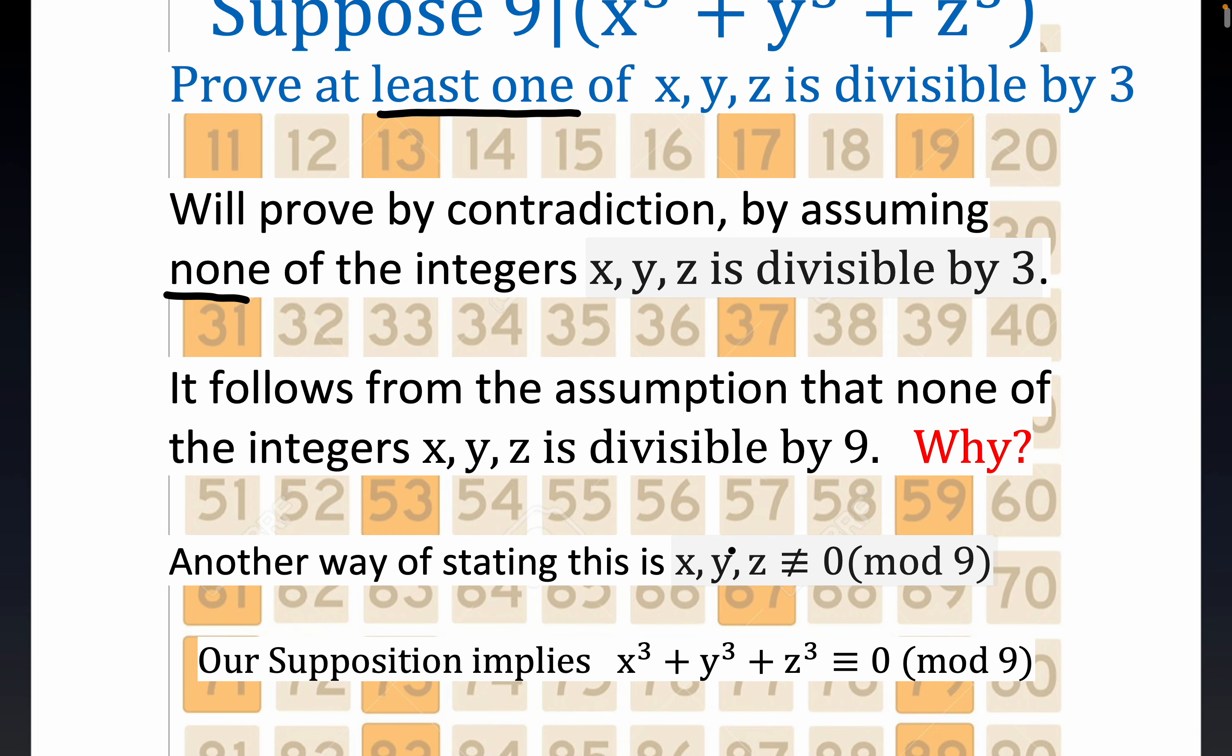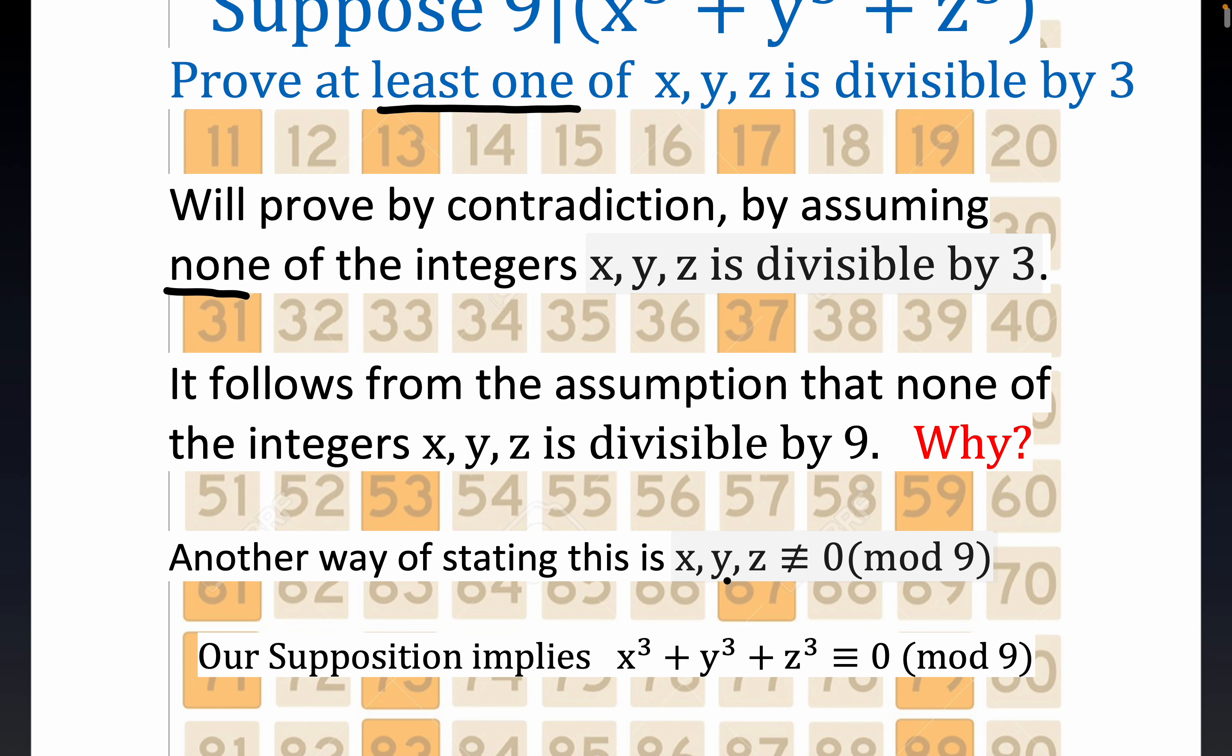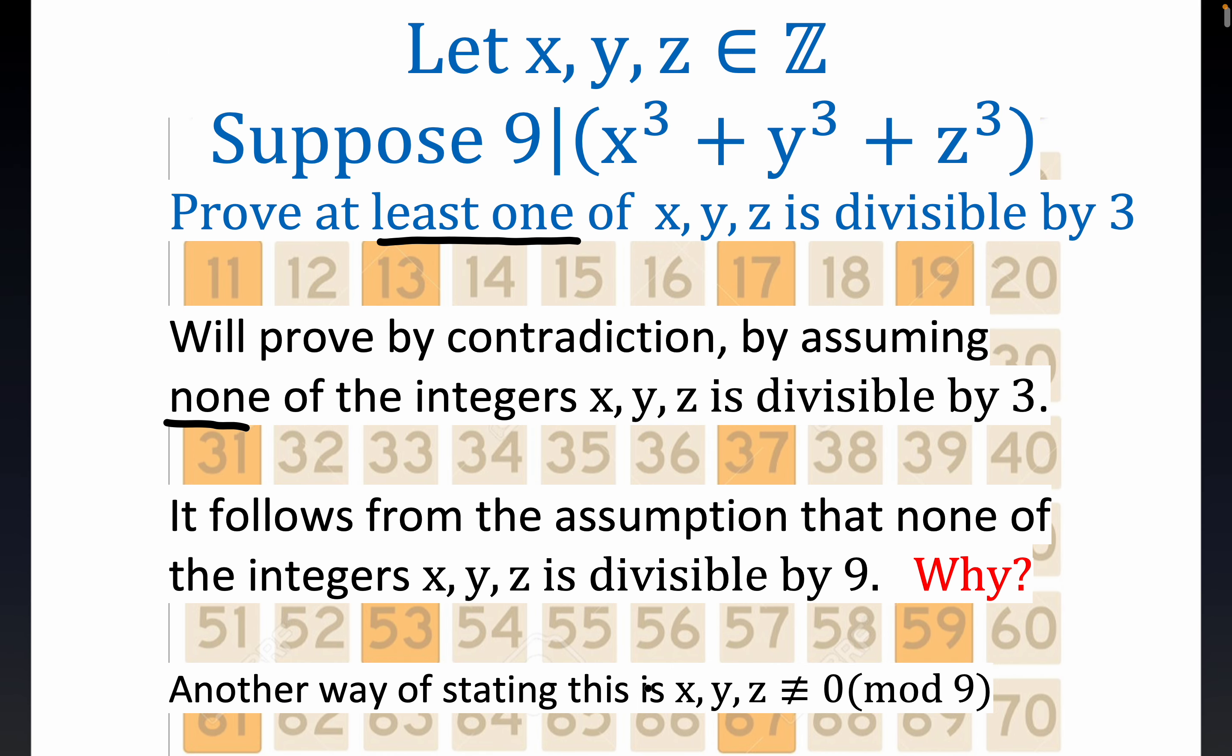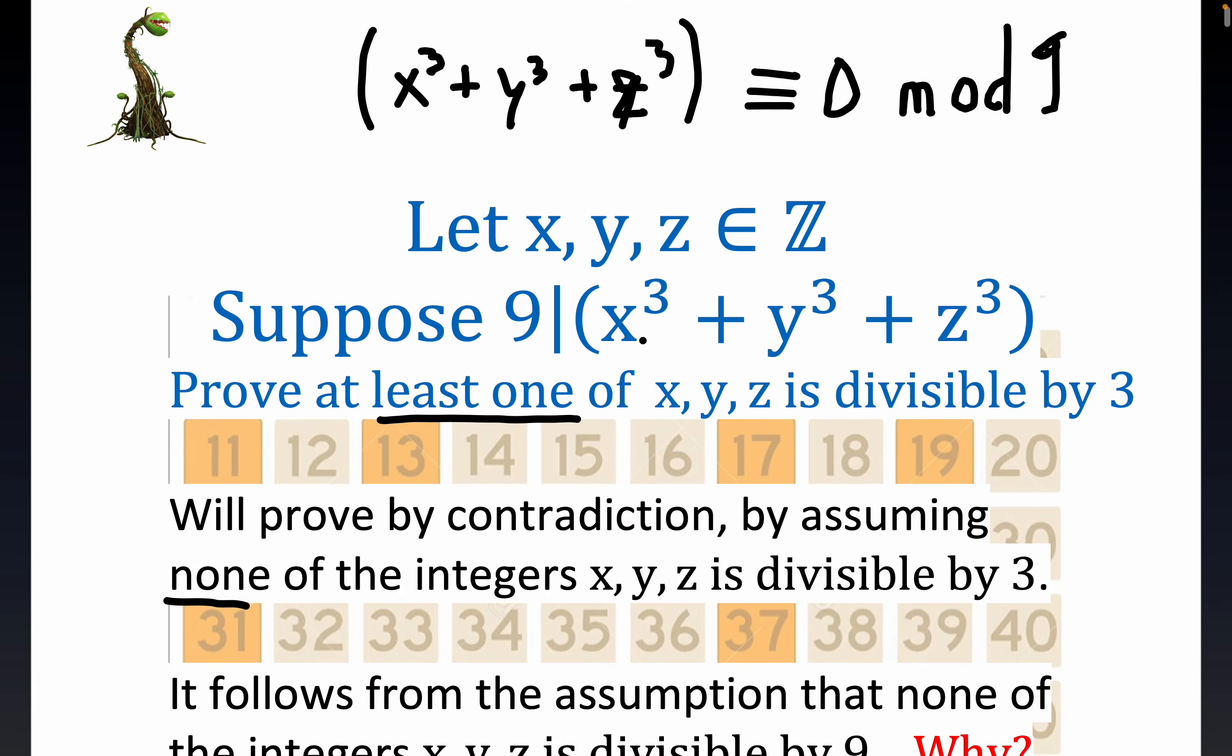And again, writing this in modular arithmetic form, we're going to write this as x, y, and z are not congruent to 0 mod 9. You can write this in multiple ways. I like doing the modular arithmetic approach. So our supposition implies x cubed plus y cubed plus z cubed is congruent to 0 modulo 9.